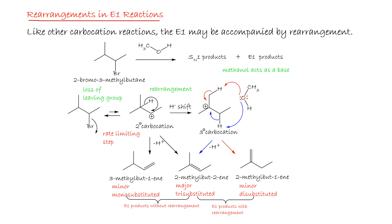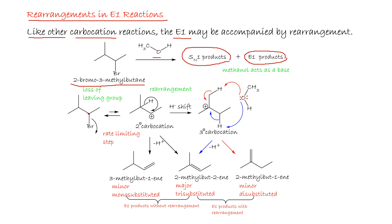Rearrangements can also occur in E1 reactions. For example, 2-bromo-3-methylbutane reacts with methanol to give both SN1 and E1 products. The first step is loss of the leaving group to give a secondary carbocation, which then undergoes a hydride shift to give a tertiary carbocation. Both secondary and tertiary carbocations are present in the medium.